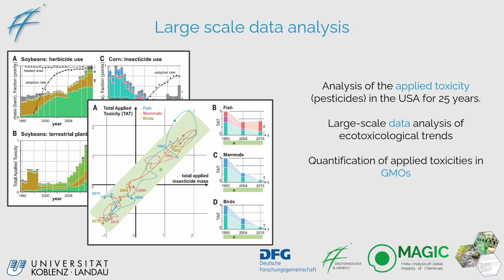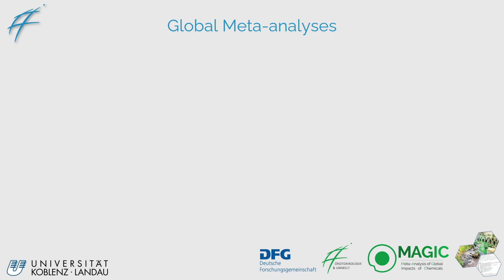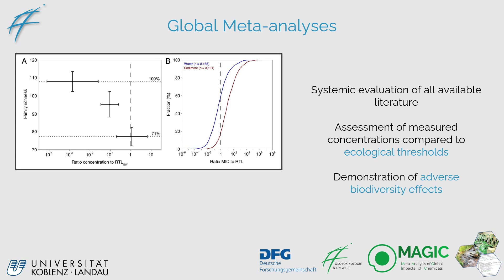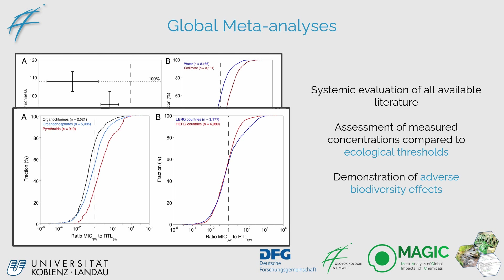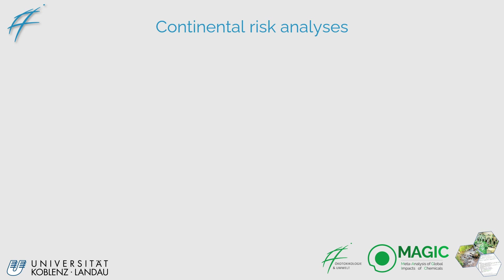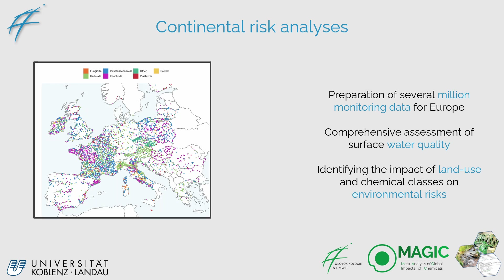In addition, we identified large ecotoxicological spatiotemporal trends and brought them into combination with the adoption of GMOs — so genetically modified crops. We also conduct global meta-analyses, which is a systematic evaluation of all available research or literature, where we assessed how concentrations of various contaminants ranged throughout the world and how adverse biodiversity effects were quantifiable. We also conduct continental risk analyses — for instance, we analyzed millions of monitoring data points for the entirety of Europe to conduct a comprehensive assessment of water quality over the past 20 years, and looked at how land use changes and various chemical classes defined differing environmental risks.